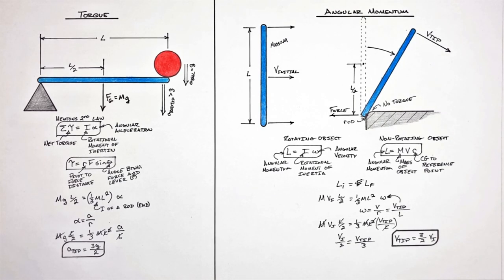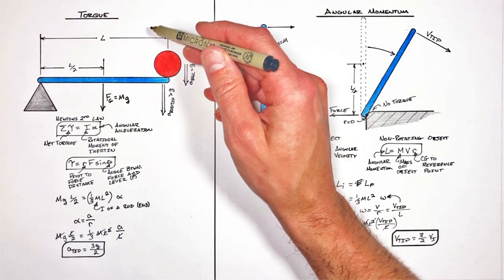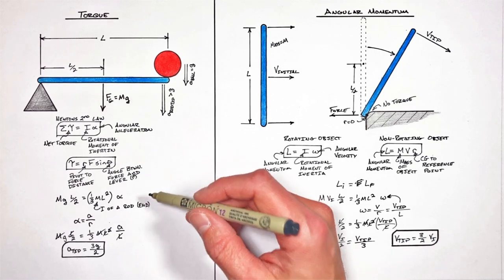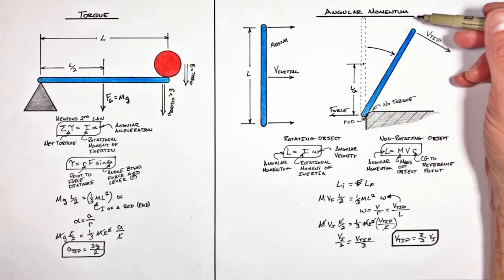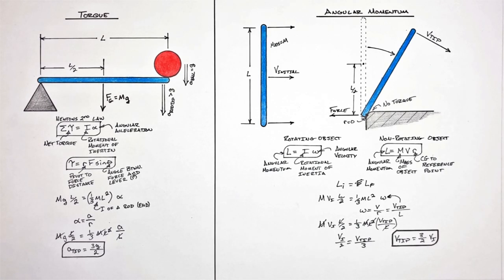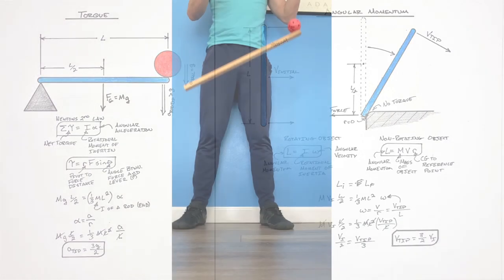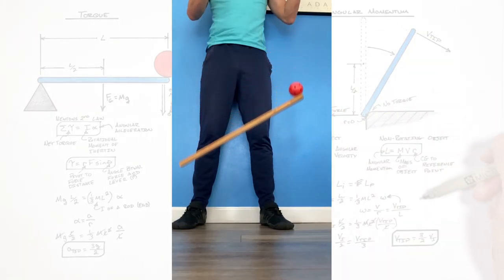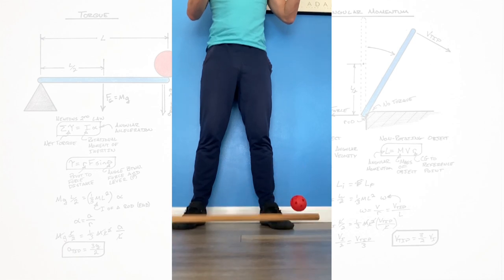Going back to the very beginning with the ball and rod falling and hitting the floor, really all we have is a combination of the torque by gravity causing the rod to speed up faster than the ball, as well as the angular momentum of the rod causing the tip of the rod to move faster than the rod was falling downward. So I hope you found this discussion of torque and angular momentum useful. And on that note, that's all for now.